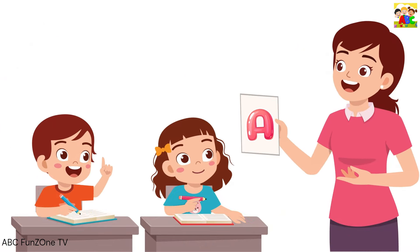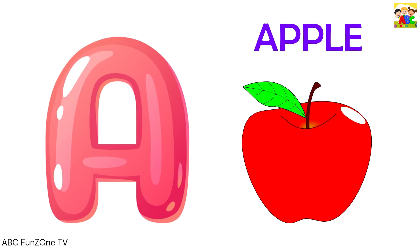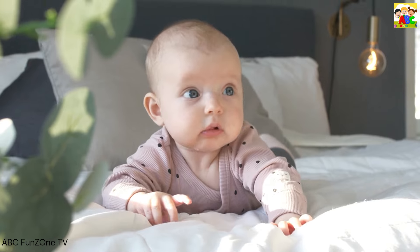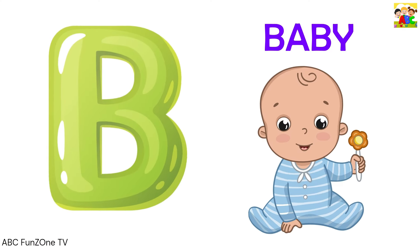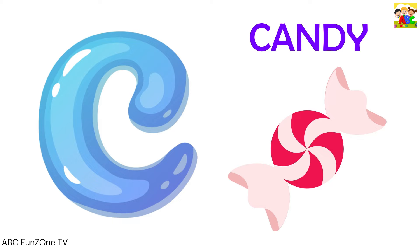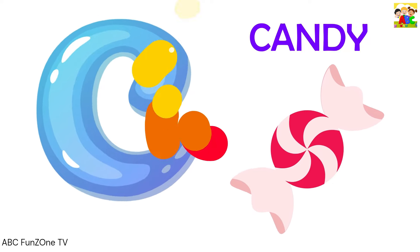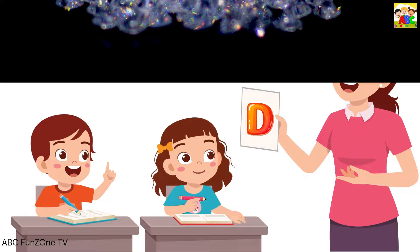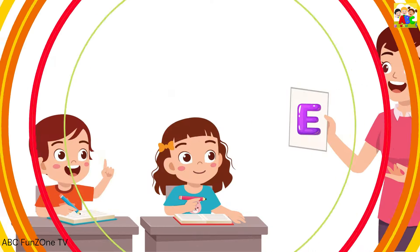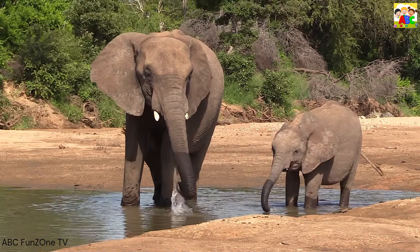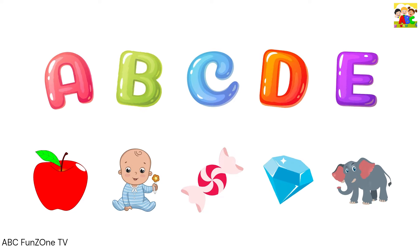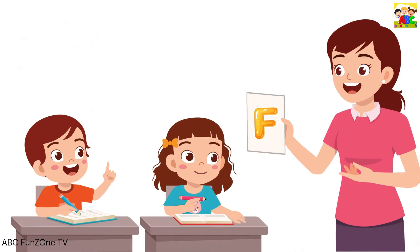A is for Apple, A-A-Apple, A-Apple. B is for Baby, B-B-Baby, B-Baby. C is for Candy, C-C-Candy, C-Candy.